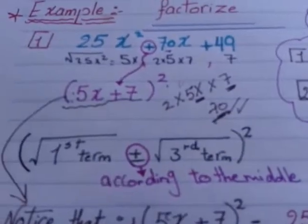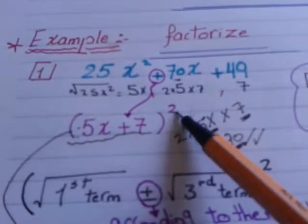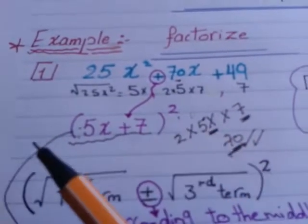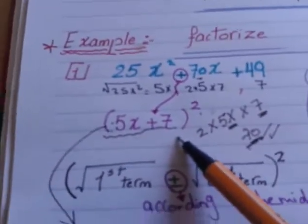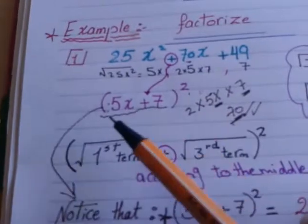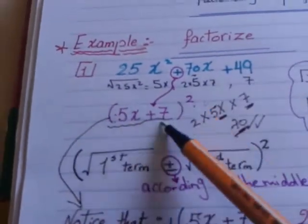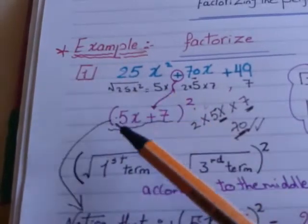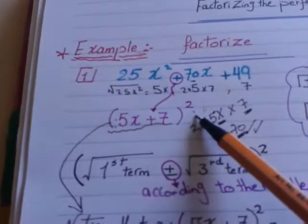Step number one: open your bracket, open your bracket right here power 2. Open just one bracket, not two brackets like the previous two parts. Drop the root of the first here, drop the root of the last here. Root of 25x² is 5x, root of 49 is 7, all to the power 2.